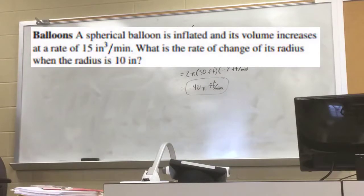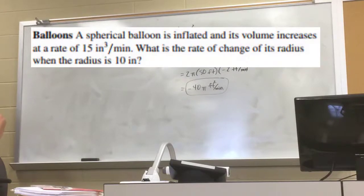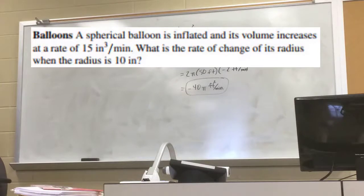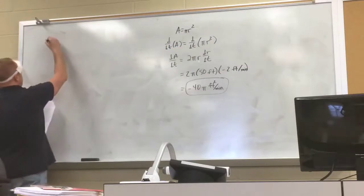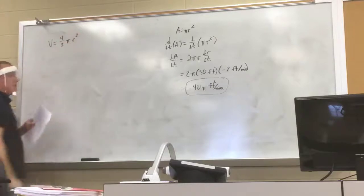A spherical balloon is inflated and its volume increases at a rate of 15 cubic inches per minute. What is the rate of change of its radius when the radius is 10 inches? The shape is a sphere, and we're talking about its volume. The formula for the volume of a sphere is V = (4/3)πR³.